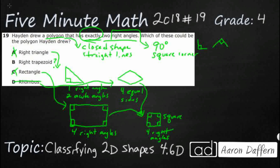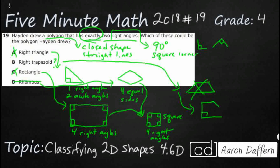So even by process of elimination, we can say the answer is going to be B. Let me draw you a right trapezoid. A trapezoid is simply a quadrilateral with one pair of parallel lines. So it looks like this — and if you put a right angle in there, the other angle has to be right as well. Our right trapezoid has exactly these two right angles, and our answer is B.